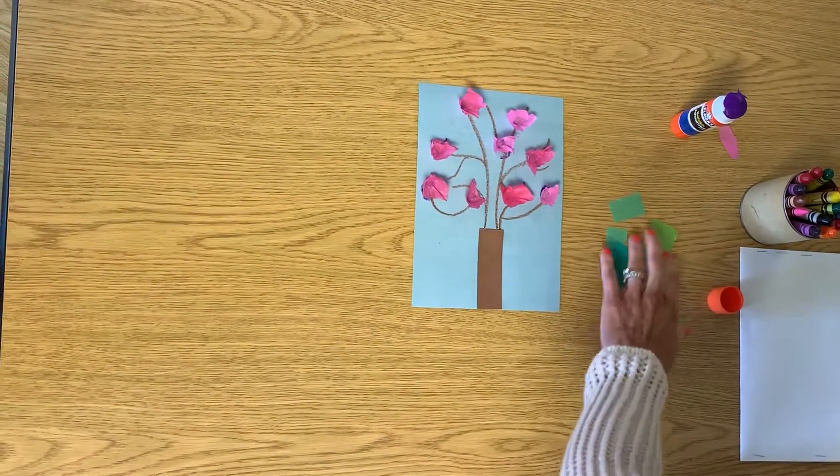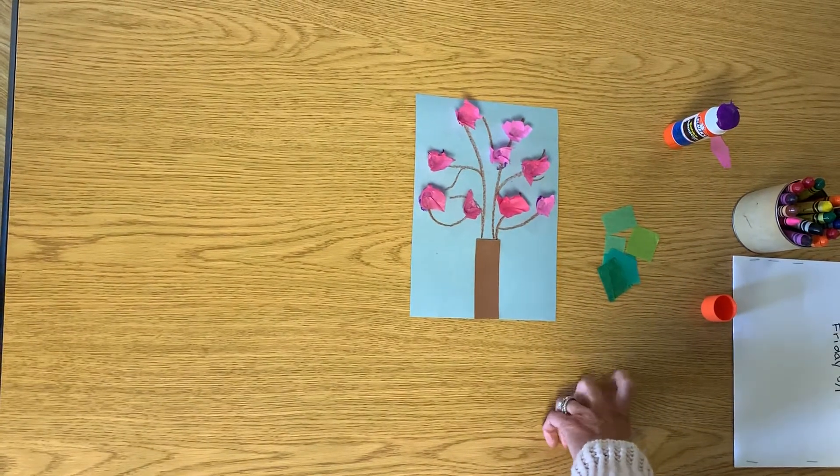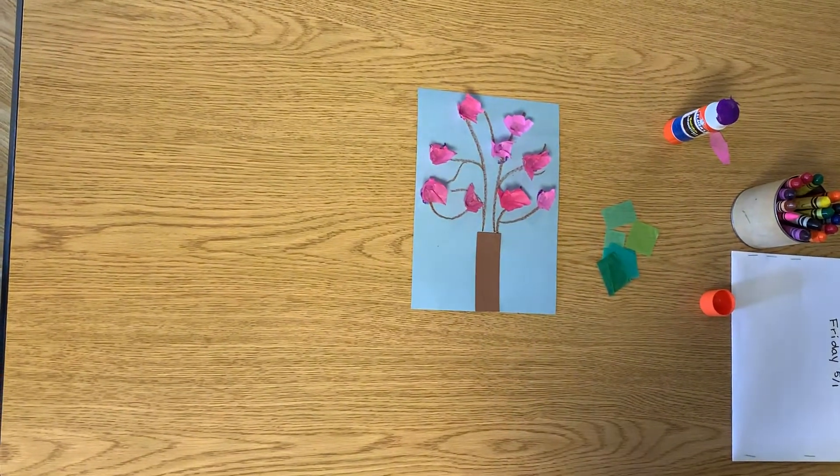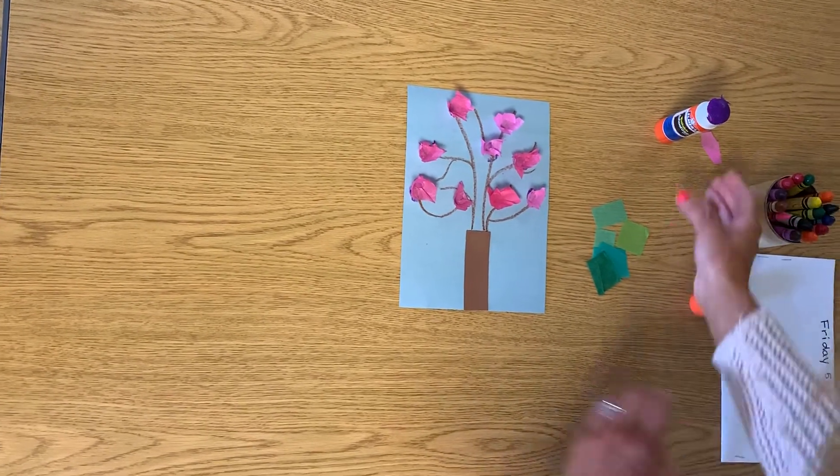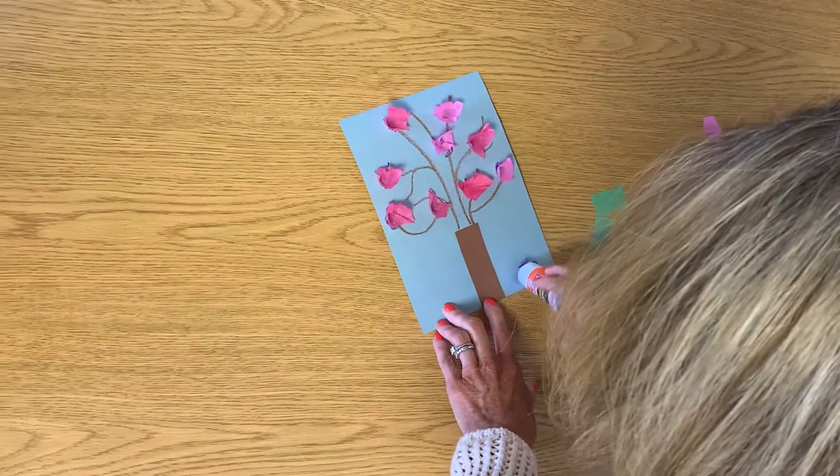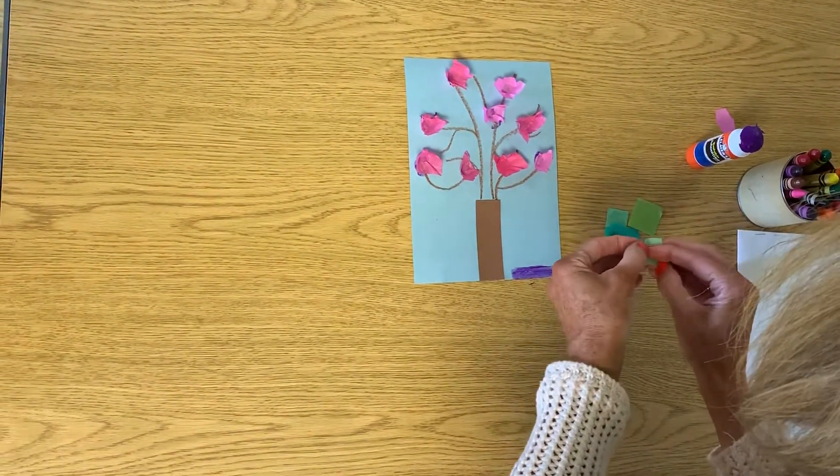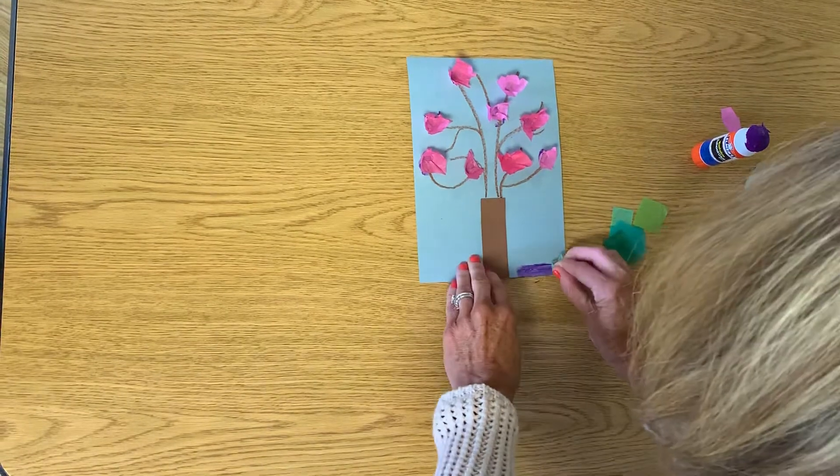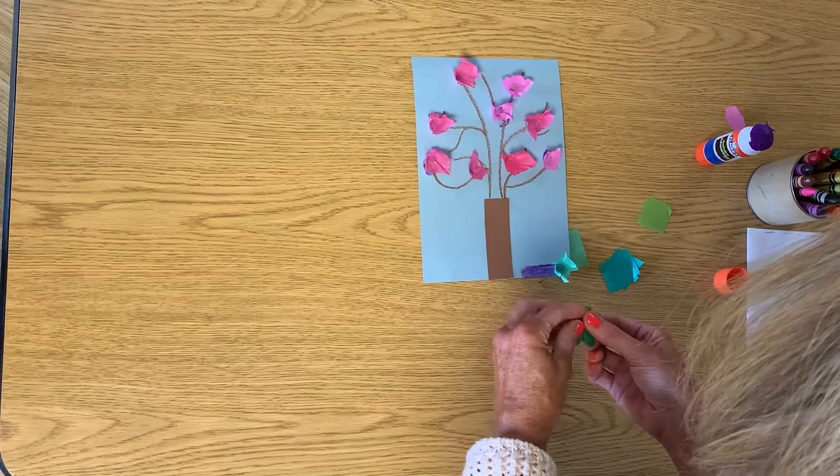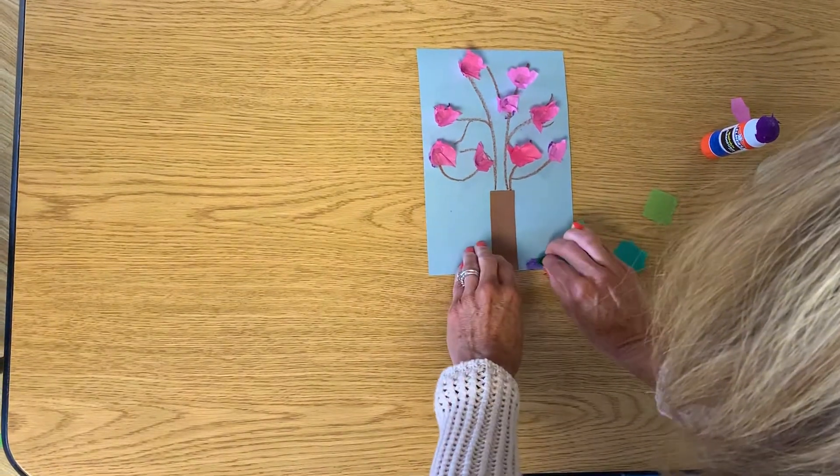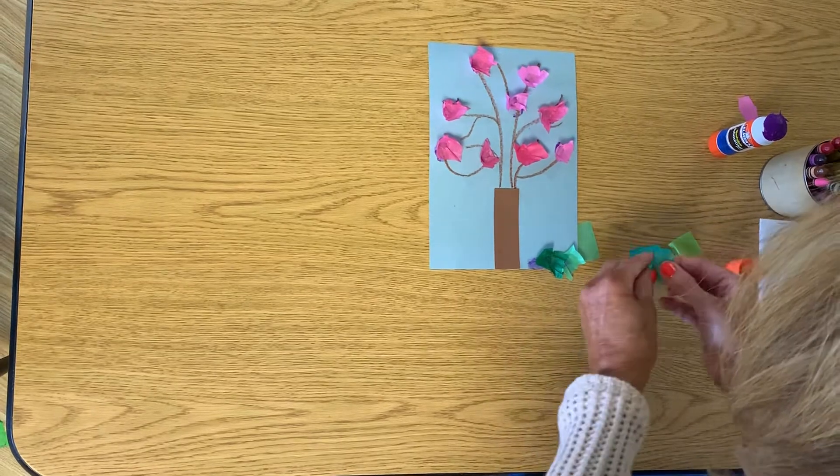You'll notice that I have some tissue paper still left, but what color is this tissue paper? It's green. I wonder what I could use around my tree that would be green. Hmm. What if I put some glue down here? And then I take the tissue paper and I do the same thing. I wrap it around my finger. What am I putting at the bottom of my tree? It's grass.